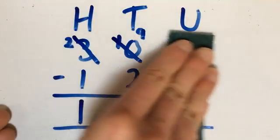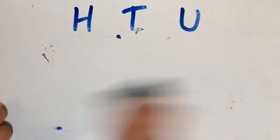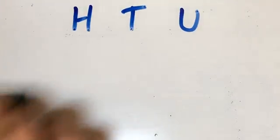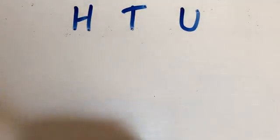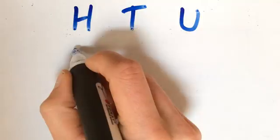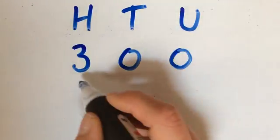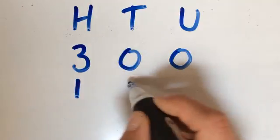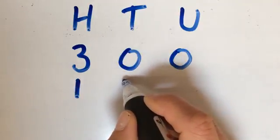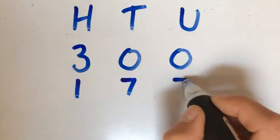Final example I'll show you today is one with two zeros in it, which again, children can sometimes find a little bit confusing. So if we've got 300, take away 100 and 77.